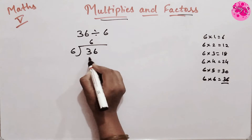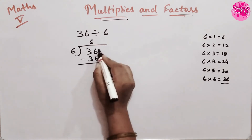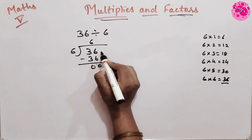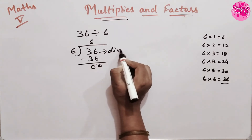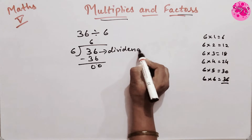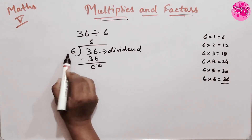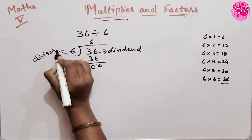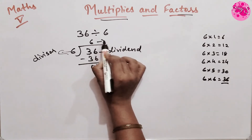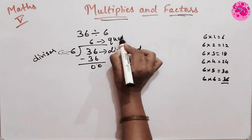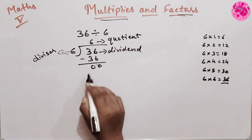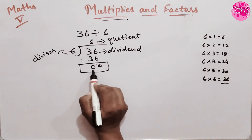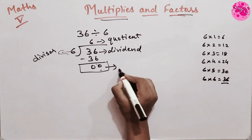So we have to write here 6 and subtract 36, so the remainder will be 0. The number 36 is called the Dividend, and the number 6 is called the Divisor. The answer we got is called the Quotient, and after subtracting, the 0 we got is called the Remainder.